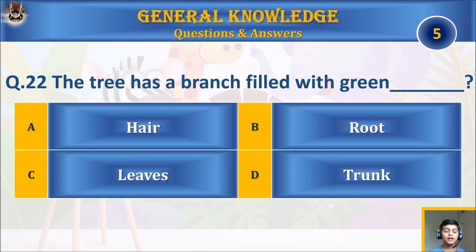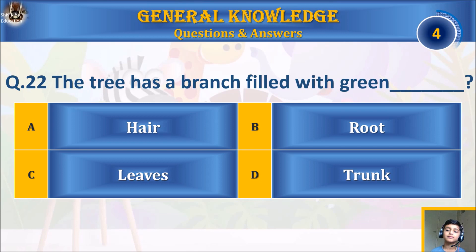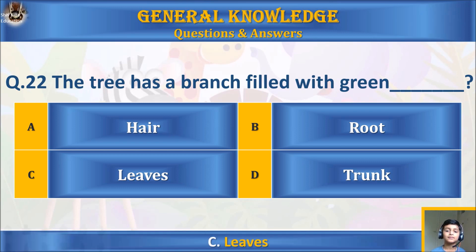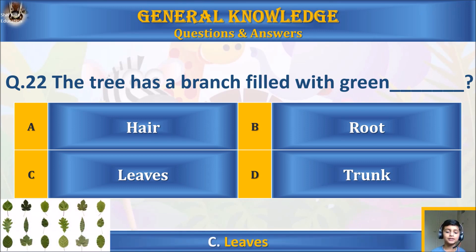Question twenty-two: the tree has a branch filled with green: A) hair, B) root, C) leaves, or D) trunk? Your time starts. The answer is C) leaves.